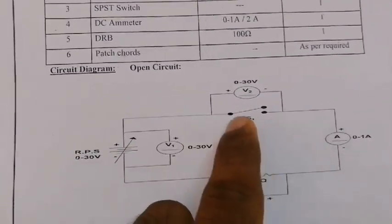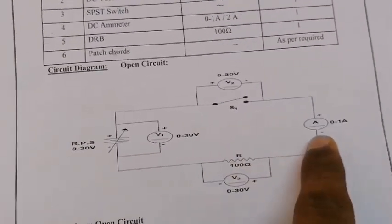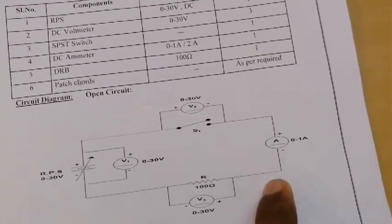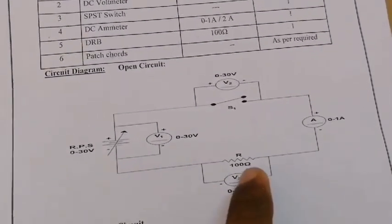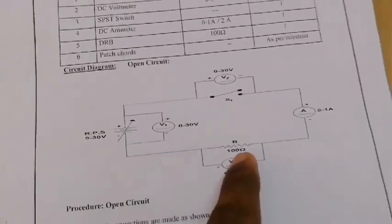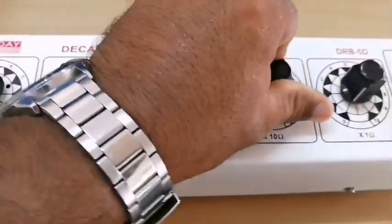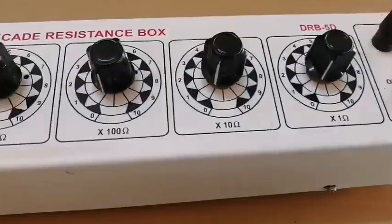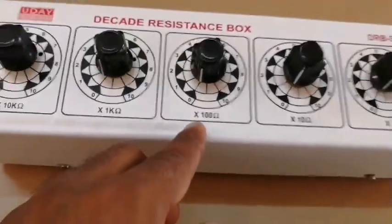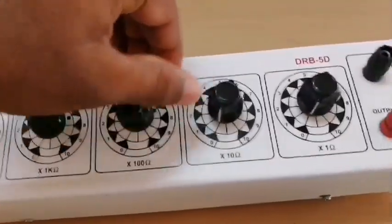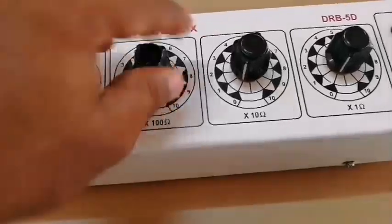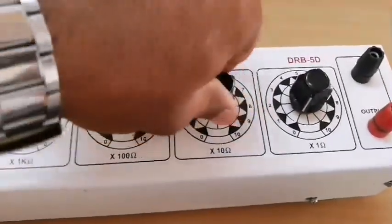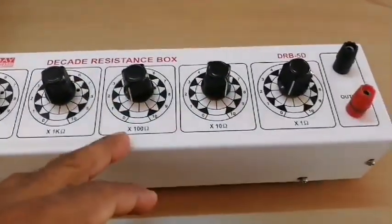From RPS positive to switch; the switch's other end is connected to the ammeter positive. Ammeter negative is connected to the load, which is the DRB. The DRB's other end is connected to the RPS negative. The resistance on the DRB is set to 100 ohms — you can set it as 1 × 100 or 10 × 10, both give 100 ohms.